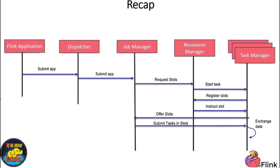The Job Manager is responsible for controlling the execution of a single application. It takes an application, creates a task execution graph from the defined job graph, manages job submission and the job lifecycle, and allocates work to Task Managers. The Resource Manager handles task slots and relies on an underlying orchestrator like Kubernetes or YARN.